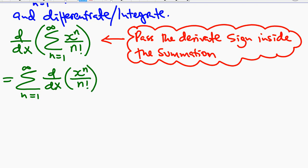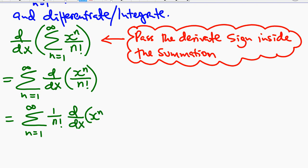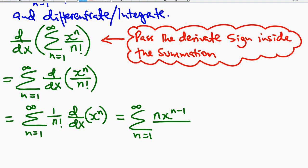So this will be d/dx of x to the power n over n factorial. Now, n factorial here is a constant — we are differentiating with respect to x, so we can factor out n factorial. That gives us 1 over n factorial times d/dx of x to the power n. Then just apply the power rule. So this will be the sum from n equals 1 to infinity of n·x^(n-1) over n factorial.